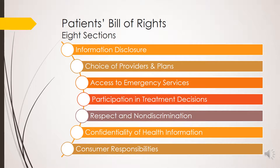The second section of the Patients' Bill of Rights is Choice of Providers and Plans, stating that we have the right to choose healthcare providers sufficient to provide access to appropriately high quality care. The third section talks about access to emergency services: if a patient has severe pain, an injury, or a sudden illness, they have the right to receive screening and stabilization emergency services whenever and wherever needed, without prior authorization or financial penalty.